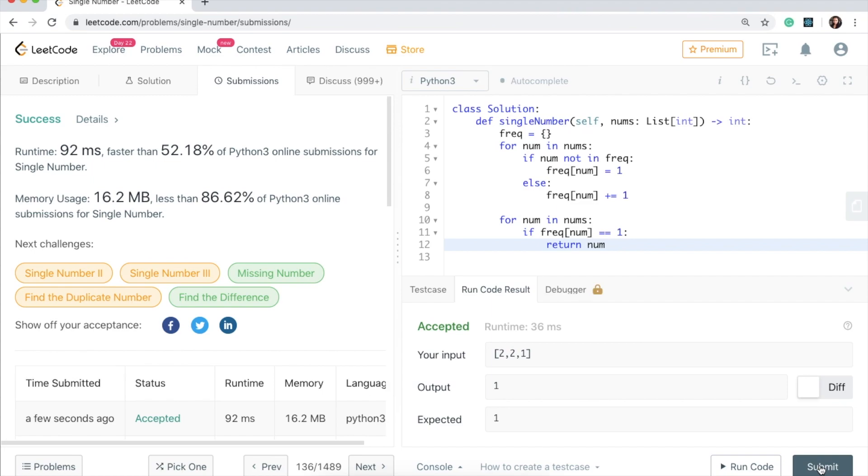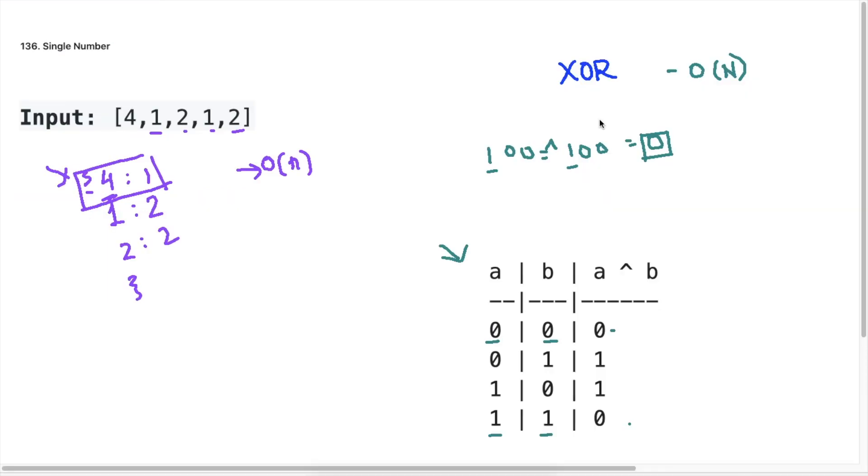Now let's see how we can use XOR to solve this problem. So the advantage of using XOR is that we can do this in place. So while our time complexity will still be the same, we will now reach a O(1) space complexity using this solution.